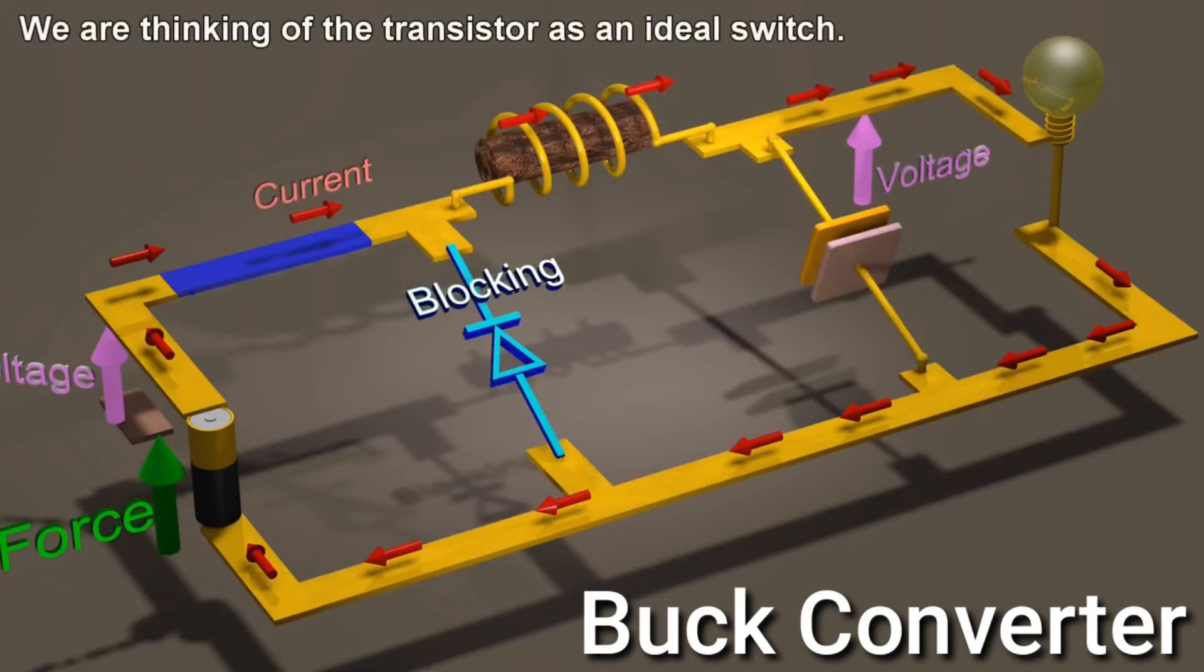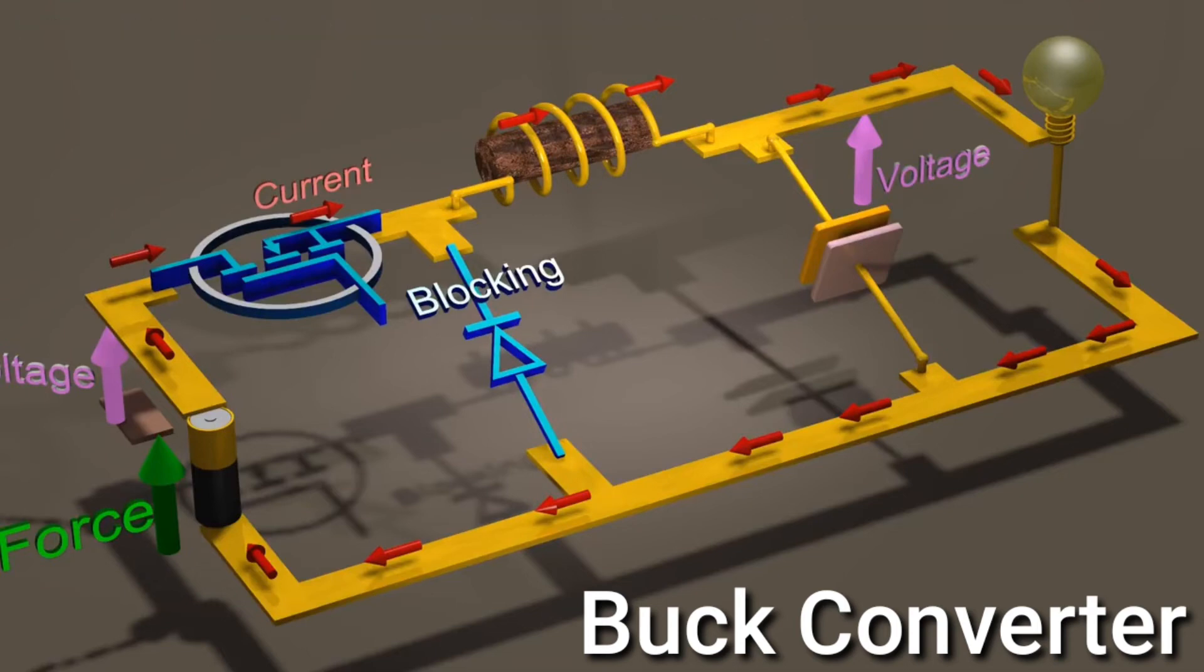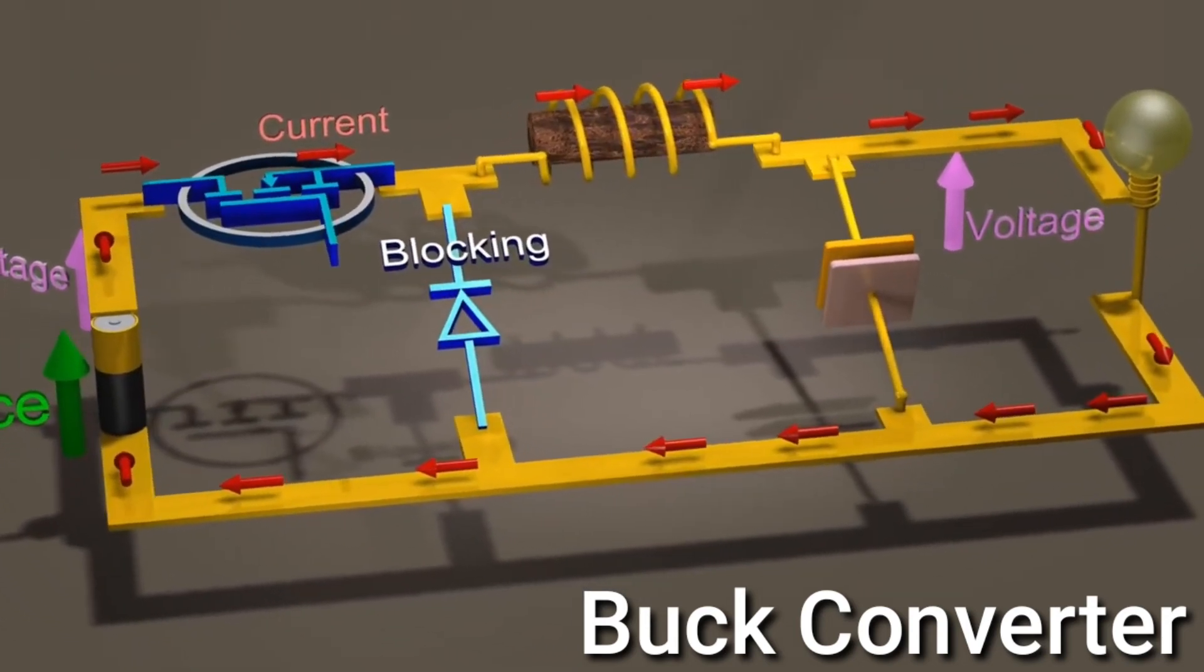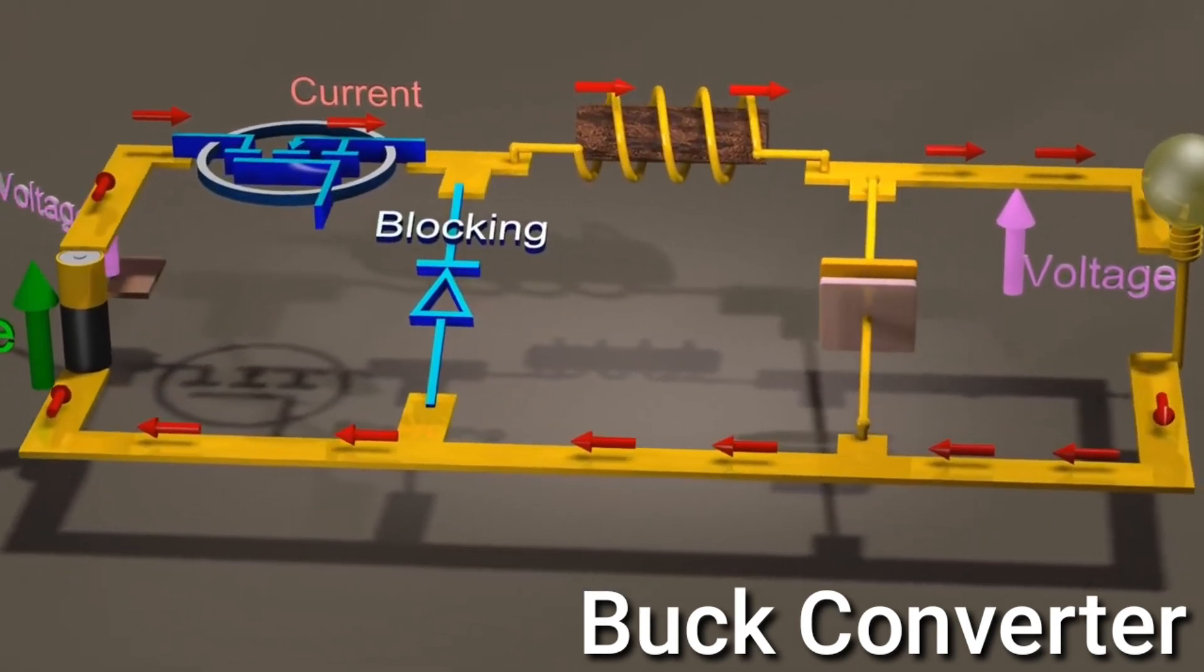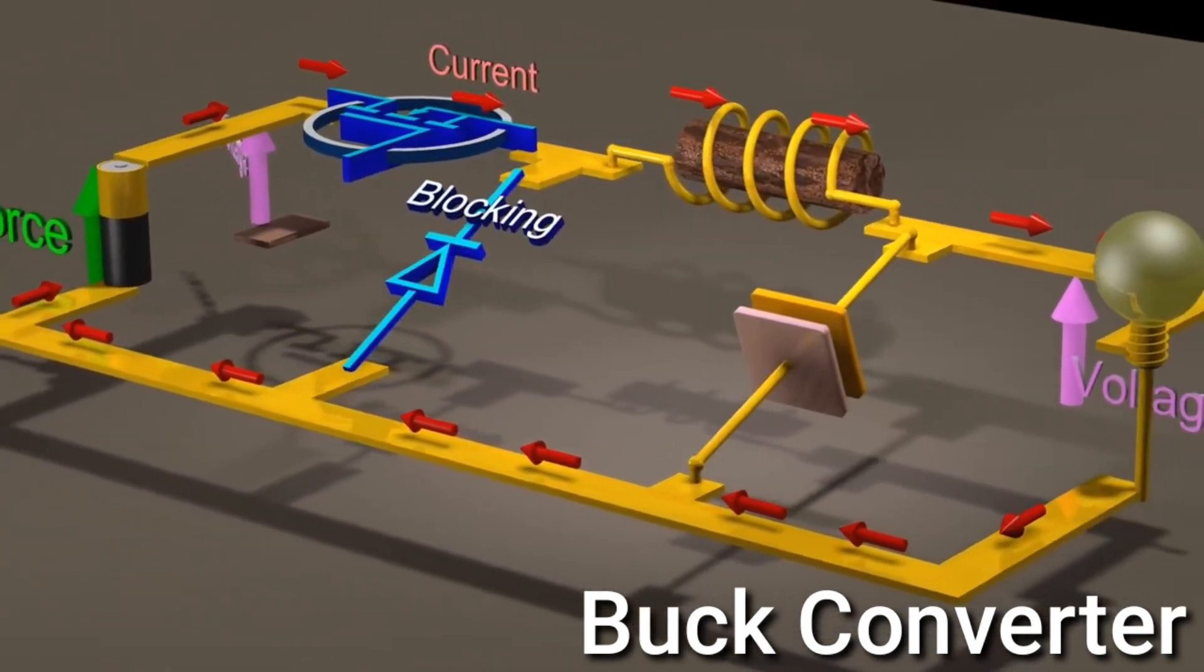We are thinking of the transistor as an ideal switch. An ideal diode can also be thought of as a switch. The diode is an OFF switch when it is blocking current from flowing in the reverse direction, and the diode is an ON switch when current flows in the forward direction.